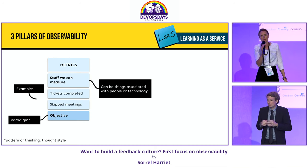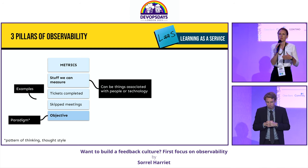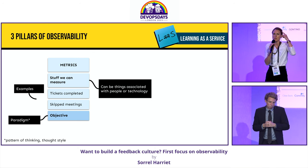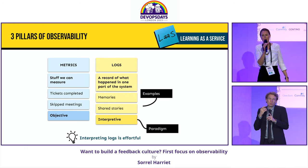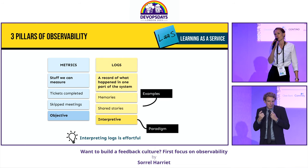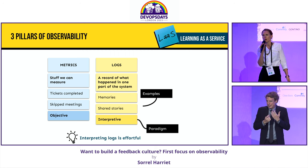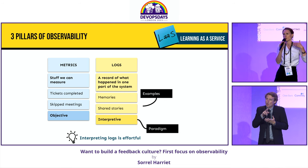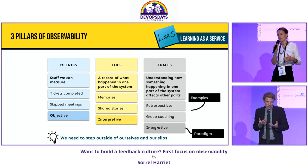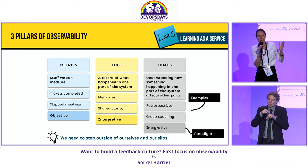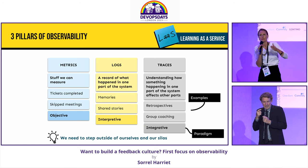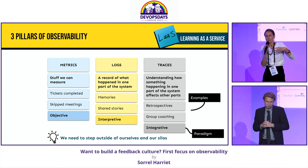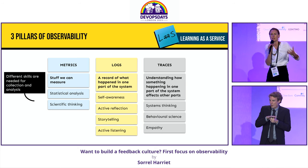Metrics, first of all, are things we can measure, associated with people or with technology — since we're thinking in socio-technical system terms. We need to adopt an objective pattern of thinking when working with metrics. Logs, on the other hand, are a record of what happened in one part of the system, so we need to think interpretively — without interpretation, logs aren't useful, and that requires effort and skill. Traces, finally, are about understanding how something happening in one part of the system affects things elsewhere, so we need to be integrative.